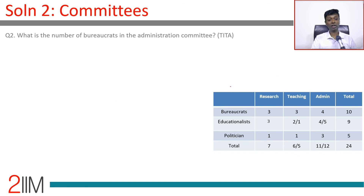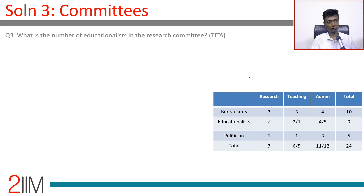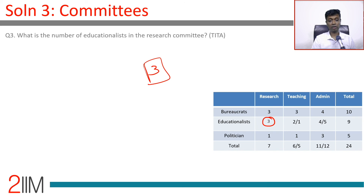Question 2: What is the number of bureaucrats in the administration committee? Bureaucrats in admin = 4. Done, very simple. Question 3: What is the number of educationalists in the research committee? Educationalists in research = 3. Done.